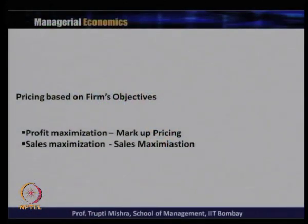The second category of pricing is based on the firm's objective. There are two objectives: profit maximization and sales maximization. In case of profit maximization, markup pricing is generally followed. In case of sales maximization, marginal cost pricing is generally followed. We will take an example using a demand function to understand how the price differs based on these two objectives.